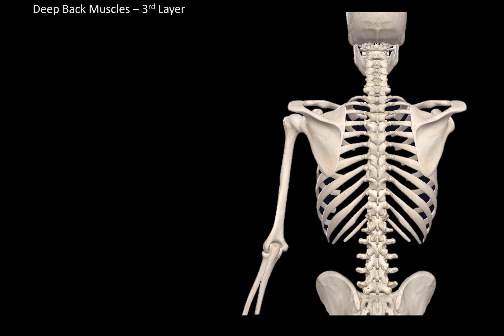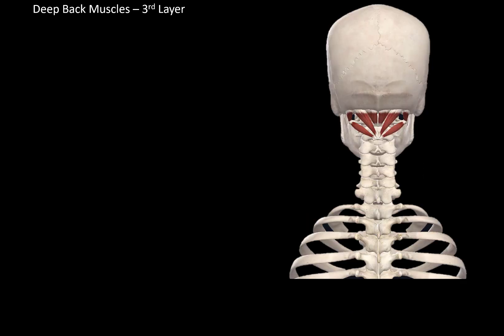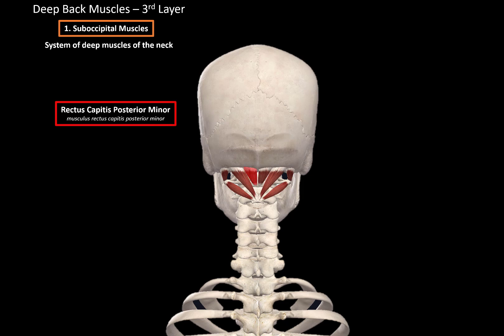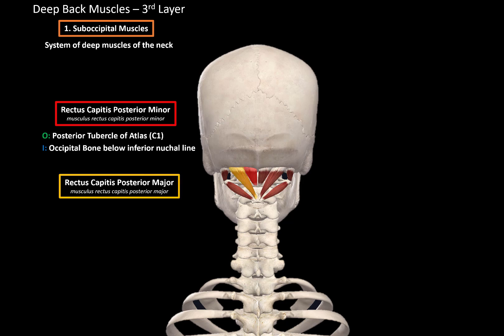Let's now cover all of these muscles, starting with the third layer, which are closest to the bones. The muscles here are called the suboccipital muscles, since they lie suboccipitally, and they are also considered a system of deep muscles of the neck. First, we have the rectus capitis posterior minor, which originate at the posterior tubercle of the atlas and insert at the occipital bone below the inferior nuchal line. Then we have the rectus capitis posterior major, which originate from the spinous process of the axis and insert at the inferior nuchal line of the occipital bone.